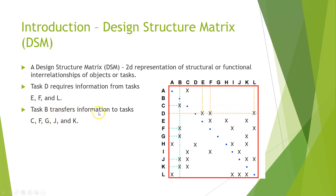Task B transfers information to tasks C, F, G, J, and K, meaning those tasks depend on task B. So if we go to column B you see an X on C, F, G, J, and K. This is a visual representation of task dependencies — it's pretty much a design structure matrix.